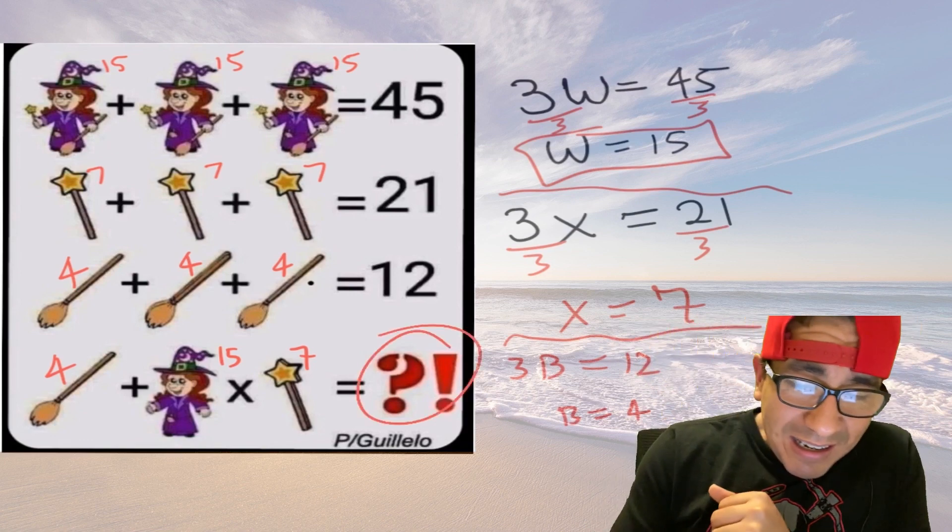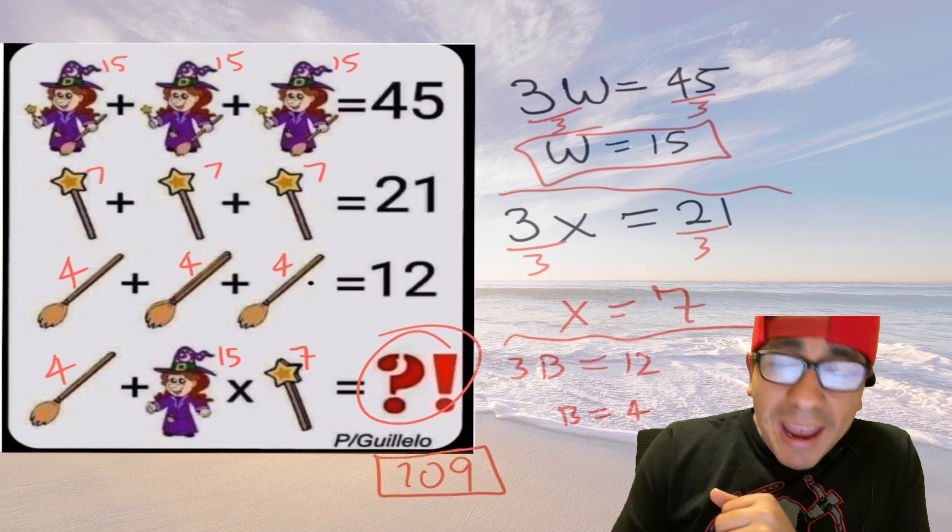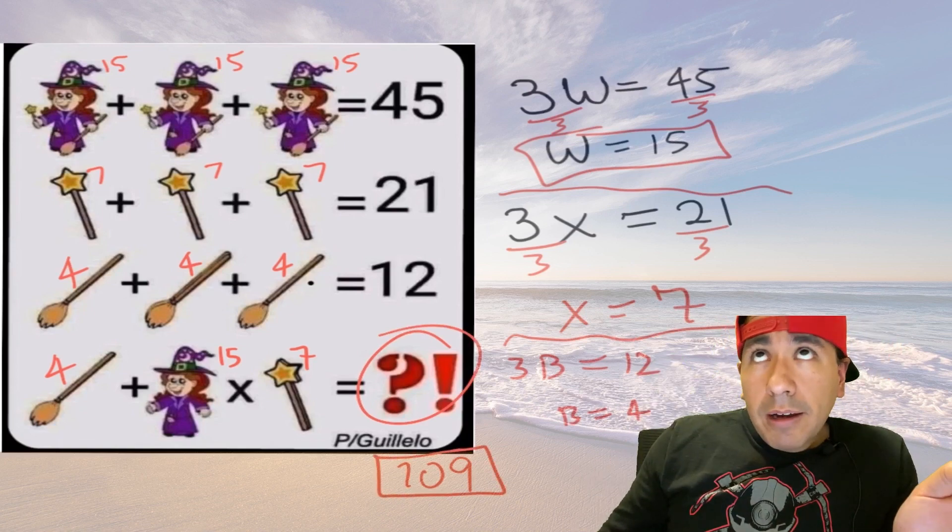So then we add four and the grand total of this right here is 109. There is your answer, again if you're looking at this without glasses.